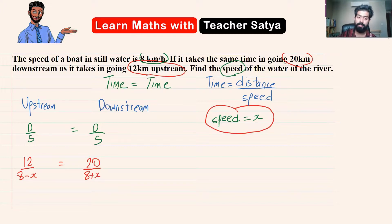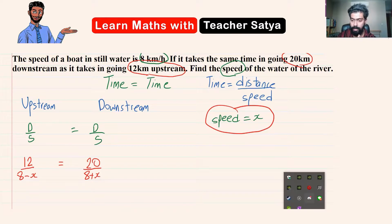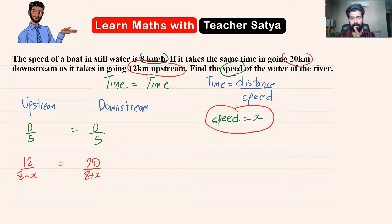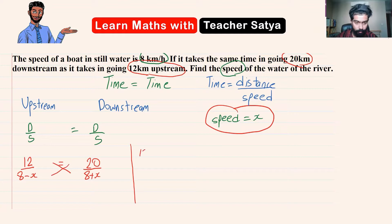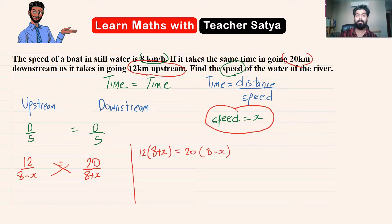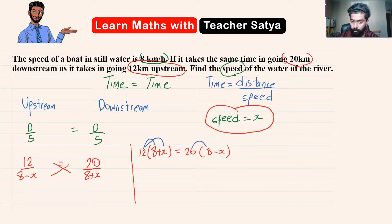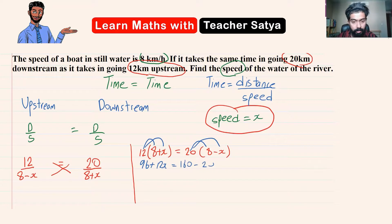Now we have an equation to find the value of x, the speed of the stream. To find x, we cross multiply: 12 multiplied by (8 plus x) equals 20 multiplied by (8 minus x). We use the distributive property on both sides — don't forget to watch the video on algebraic identities for more on distributive property.